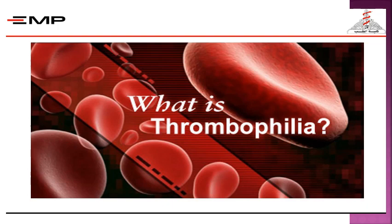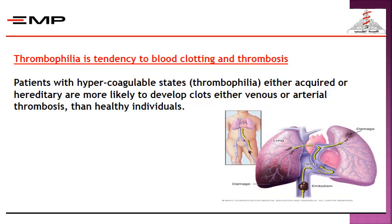What is thrombophilia? Thrombophilia is the tendency to blood clotting and thrombosis. Patients with hypercoagulable states or thrombophilia — either acquired or hereditary — are more likely to develop clots, either venous or arterial, than healthy individuals.